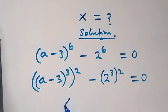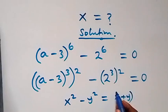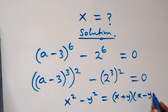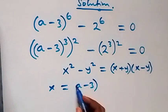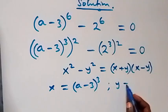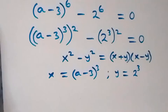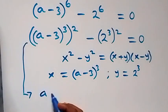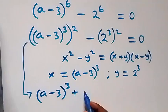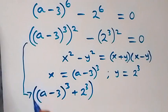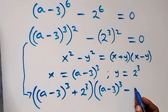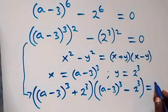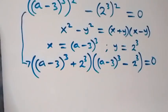From here, we can write this as (a minus 3) raised to power 3, then raised to power 2, minus 2 raised to power 3, then raised to power 2, equals to 0. This follows from x squared minus y squared, which is the same thing as (x plus y) multiplied by (x minus y), where x is (a minus 3) raised to power 3 and y is 2 raised to power 3.